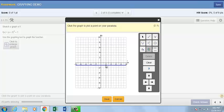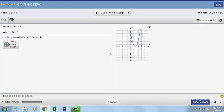We then plot one other point, and because the parabola is symmetric, MyMathLab will finish our graph. Click save and check your answer.